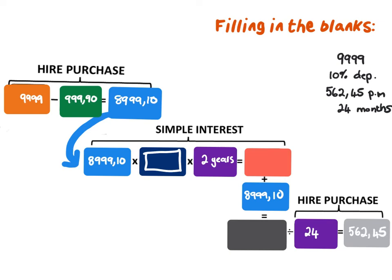Let's start doing this process backwards. If I had to divide by 24 to get the monthly repayment, then I multiply by 24 when working backwards, which gives me a total repayment of 13,498 Rand and 80 cents. Then, instead of adding the loan amount as I do when working forwards, I subtract it to find the interest amount. That gives me 4,499 Rand and 70 cents.